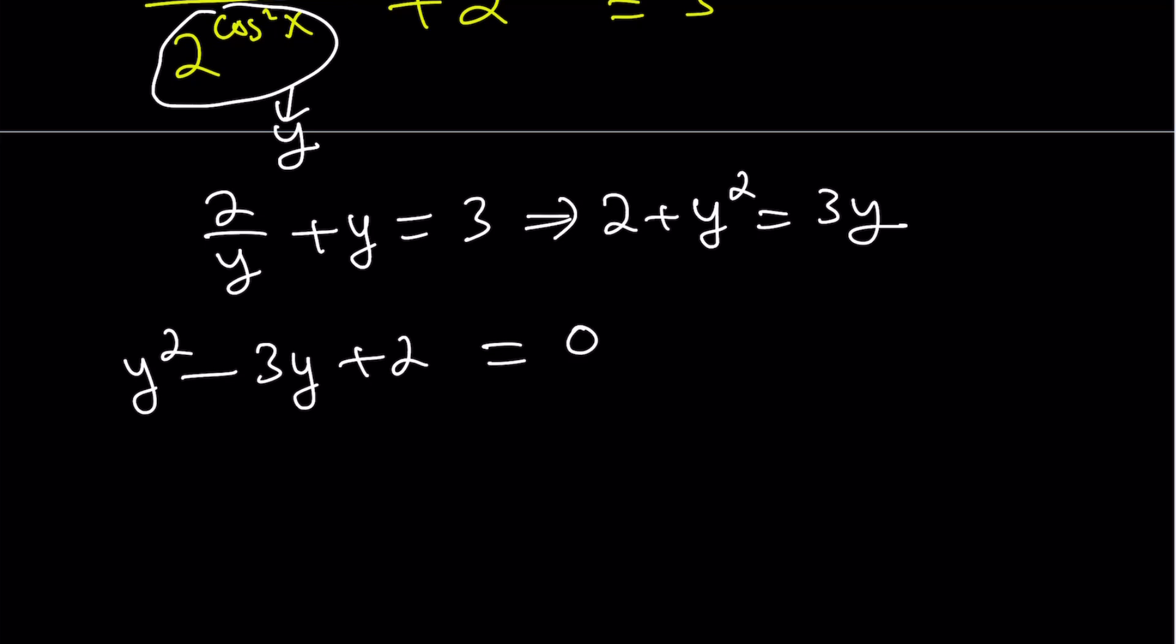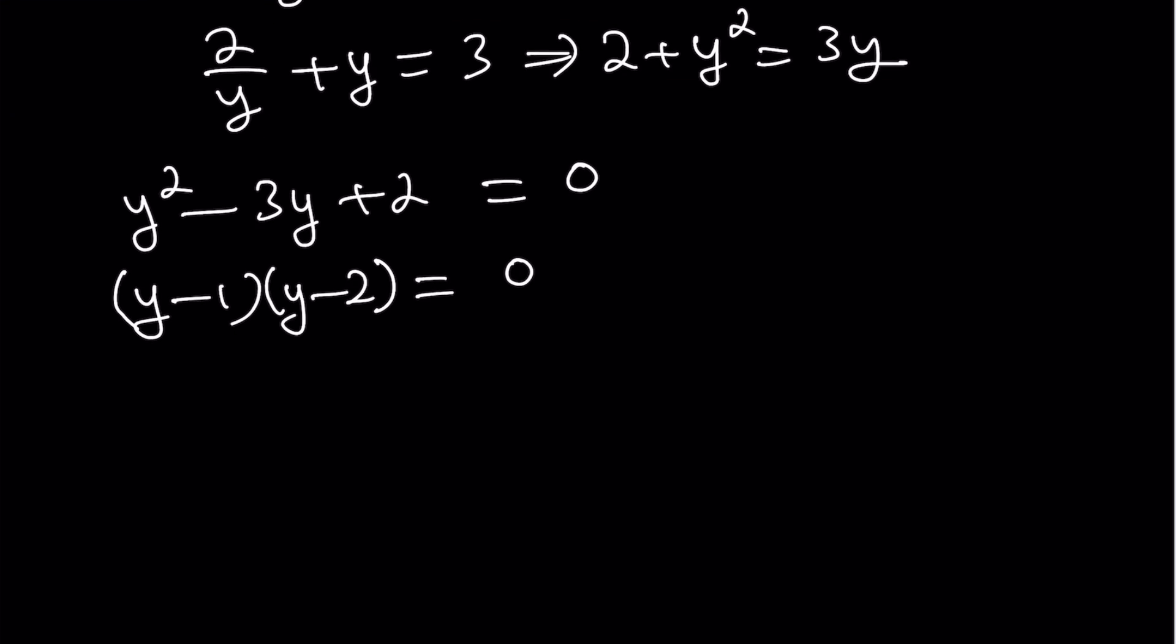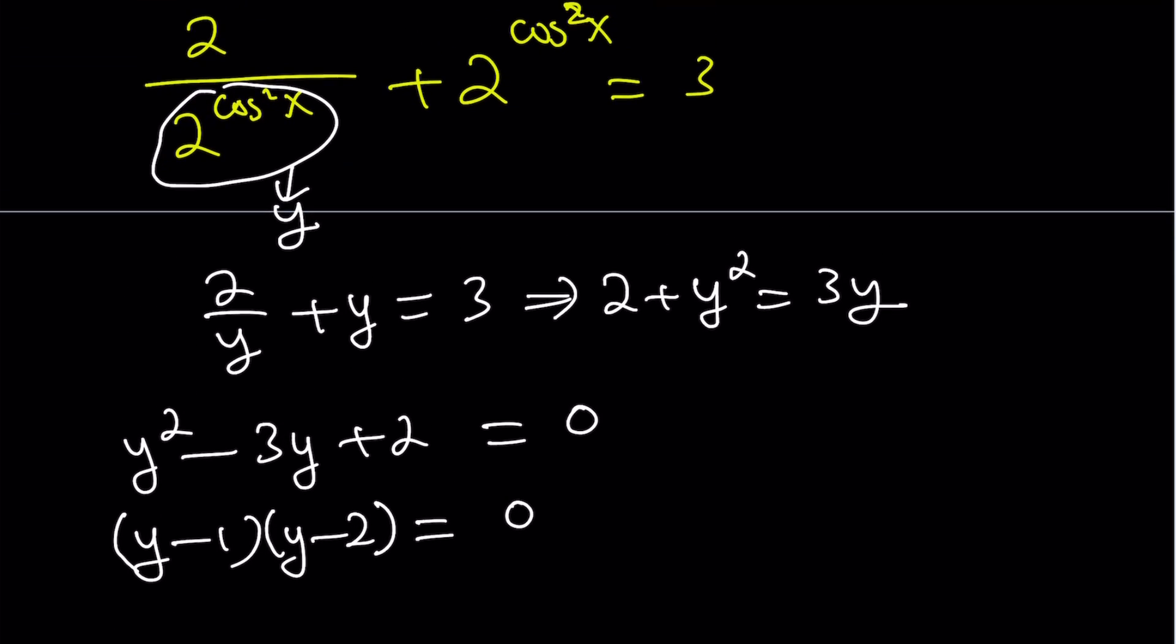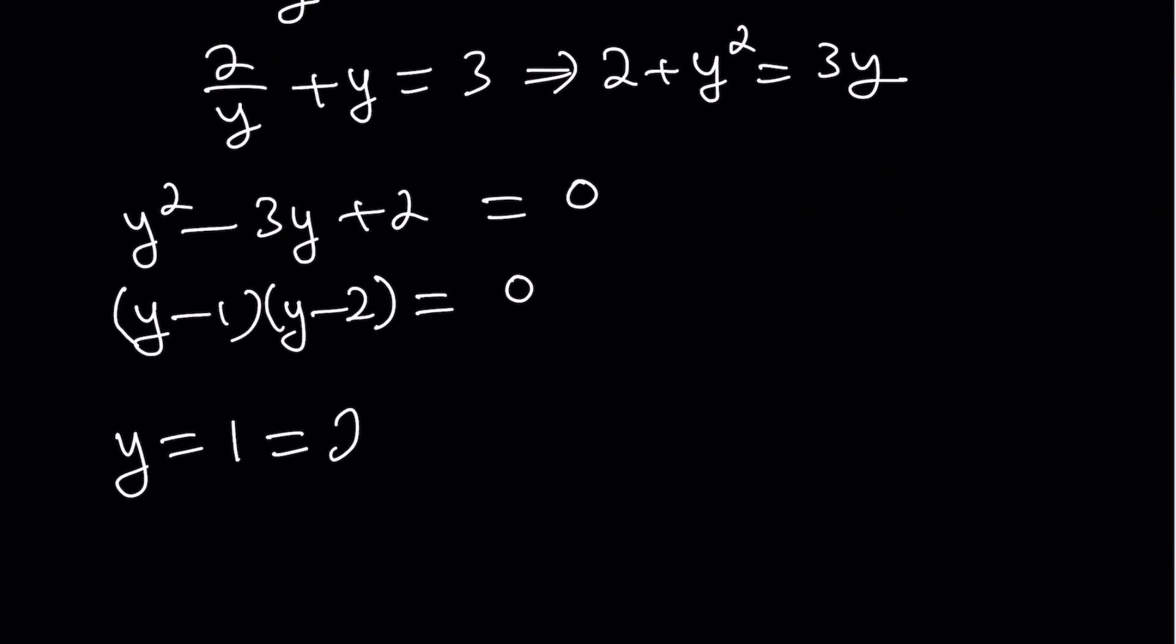Now we can go ahead and turn this into a quadratic, which is fairly easy to solve. And as you know, this is factorable. So I can just write it as y minus 1 times y minus 2. And then this gives us two solutions for y. And they're both valid, as you will see in a little bit. So first solution y equals 1. Remember y is 2 to the power cosine squared x. So let's go ahead and set it equal to 2 to the power cosine squared x.